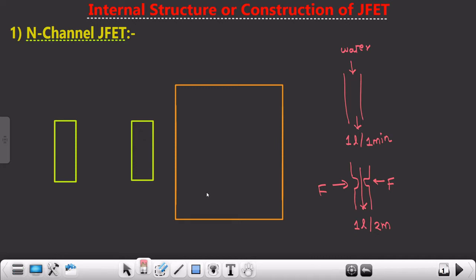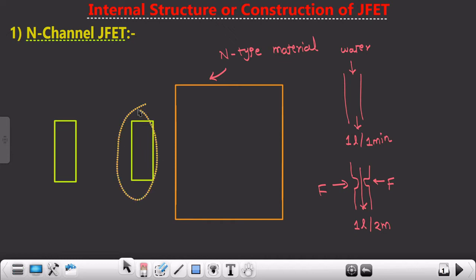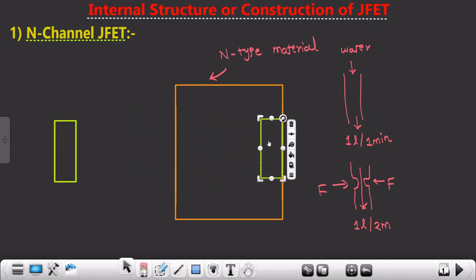As mentioned in the semiconductor course, for designing electronic components we require extrinsic semiconductors. When I talk about extrinsic semiconductors, I mean doping two different types of materials: N-type material and P-type material. Since we are dealing with N-channel JFET first, I will take N-type material and then dope P-type into it in such a way that just by changing the input parameter I can control the output current.